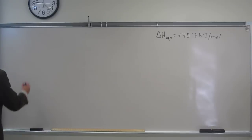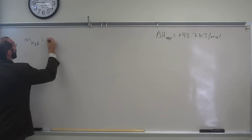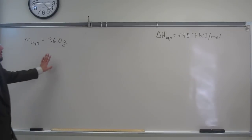So, for water, plus 40.7 kilojoules per mole. So, if we've got, what does it say? We've got the mass of the water at 36.0 grams. So, how will we know how much energy we need? What do we need? How would we do this? Can anybody help me?